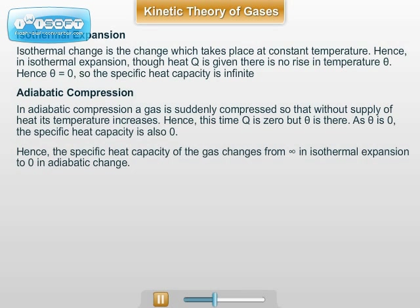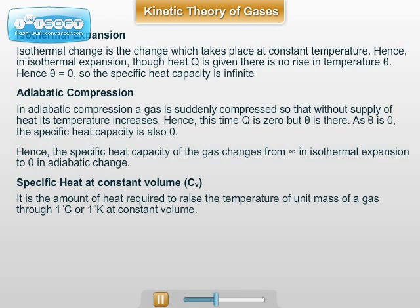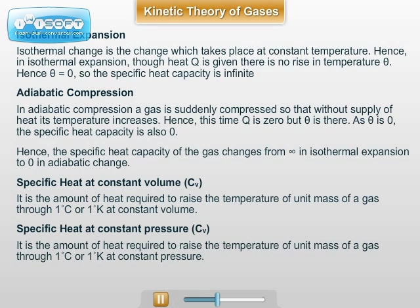Specific heat at constant volume is the amount of heat required to raise the temperature of unit mass of a gas through 1 degree Celsius or 1 degree Kelvin at constant volume. Specific heat at constant pressure is the amount of heat required to raise the temperature of unit mass of a gas through 1 degree Celsius or 1 degree Kelvin at constant pressure.